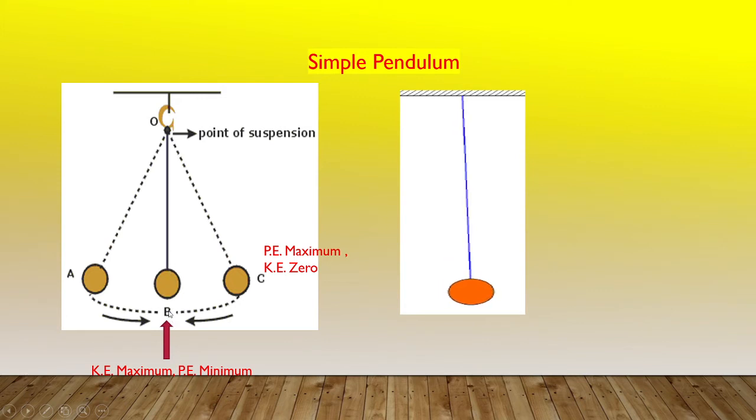From this mean position, the pendulum is drawn towards one extreme A such that the angle remains small. In doing so, the bob gains some finite potential energy.